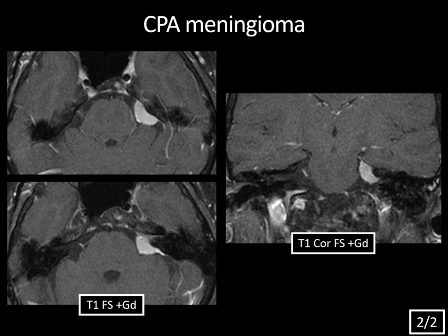Meningiomas are the most common extra-axial tumor in adults, but only about 10% occur in the posterior fossa. They usually occur along the falx, the parasagittal region, and along the sphenoid wing. They're extra-axial — outside the brain parenchyma — and they classically have a tail of dural thickening, which you can see enhancing here. Notice also that this extends slightly into the left internal auditory canal but is not centered within it like the vestibular schwannoma was, and it's not expanding the porous acousticus.